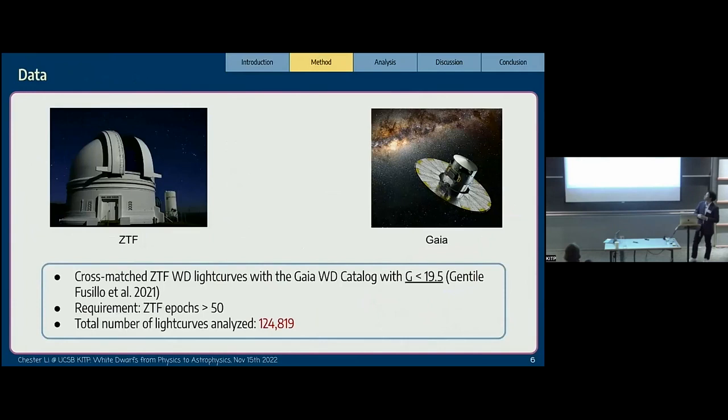To determine our sample, we cross-matched the ZTF with the Gaia white dwarf catalog with g less than 19.5. We only analyze those with more than 50 ZTF observations because of the period searching process. In total, once again, we analyzed more than 124,000 light curves.